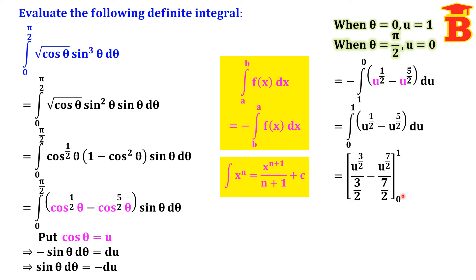Substituting the limits from 0 to 1: at the upper limit u = 1, 1 to any power is 1. So we get 1 divided by (3/2) — taking the reciprocal gives 2/3 — minus 1 divided by (7/2), giving 2/7. At the lower limit u = 0, everything becomes 0. So the answer is 2/3 minus 2/7, which equals 8/21.